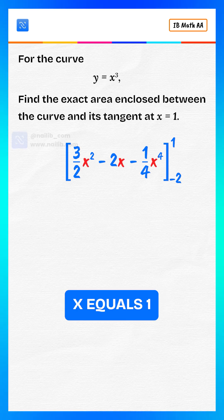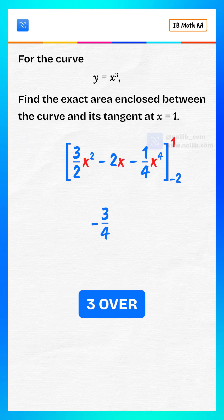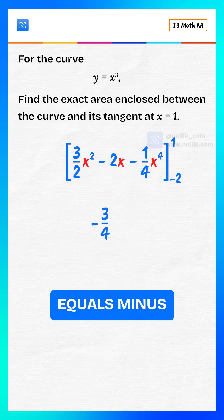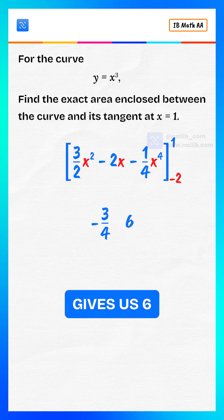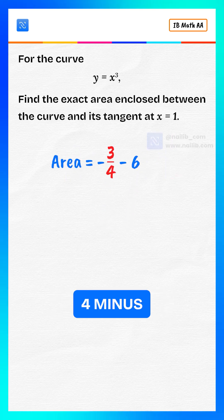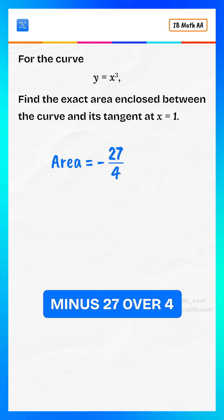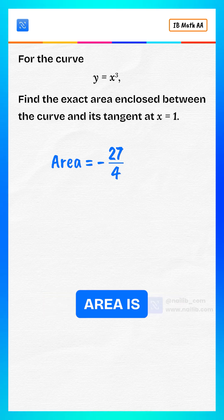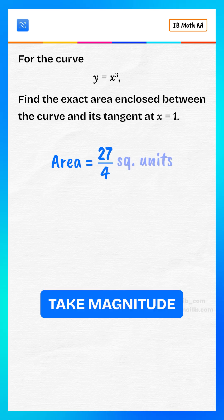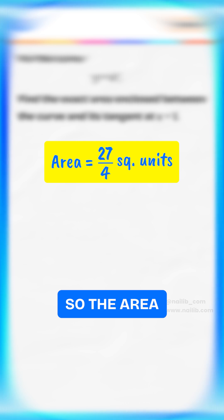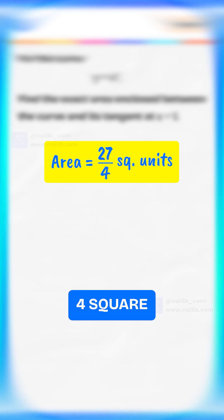Now plug in x equals 1 and gives us minus 3 over 4. Now plug in x equals minus 2 and gives us 6. Now area equals minus 3 over 4 minus 6 equals minus 27 over 4. Area is always positive, so take magnitude. So the area equals 27 over 4 square units.